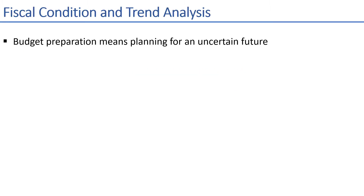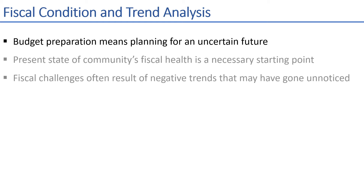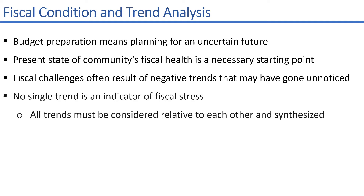One of the biggest challenges in budget preparation is the uncertainty inherent in trying to plan for future events. When preparing the upcoming budget, it's always useful to have a clear picture of how your community arrived at its present financial condition and the trends that contributed to its current state. As there is no one indicator of fiscal stress, communities should take stock of their overall fiscal condition rather than zeroing in on specific measures individually and at a certain point in time.